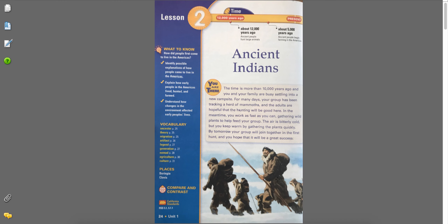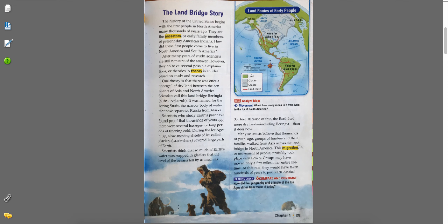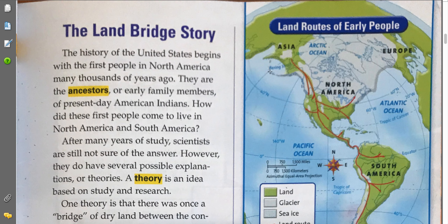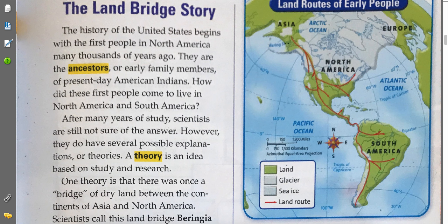So here are some ancient Indians and we're pretending that we're part of this group. The Land Bridge Story: The history of the United States begins with the first people in North America many thousands of years ago. They are the ancestors, or early family members, of present-day American Indians. How did these first people come to live in North America and South America? Looking at this map, people think that people came from Asia across a bridge made of land that is not there anymore — it's underwater. That's how they came into North America, with California right here, and all the way down to South America.